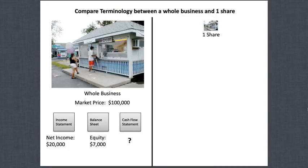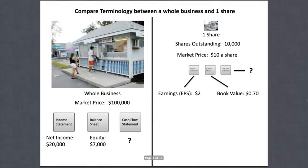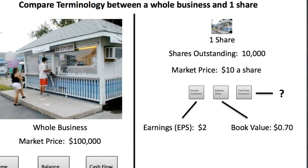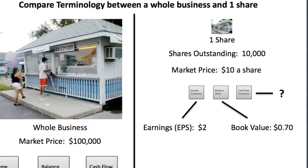I'm skipping the cash flow statement as that's taught later in Course 2. Now let's look at one share. The total shares outstanding is ten thousand, so the market price is $10 per share ($100,000 divided by 10,000). The best way to understand stock investing is to look at one share like it's a miniature business — think of miniature people working in a tiny ice cream stand.